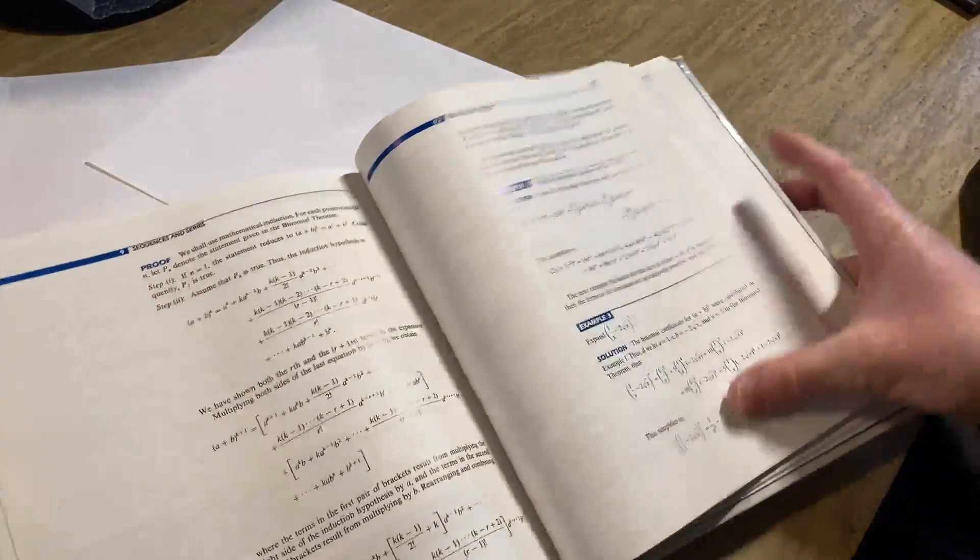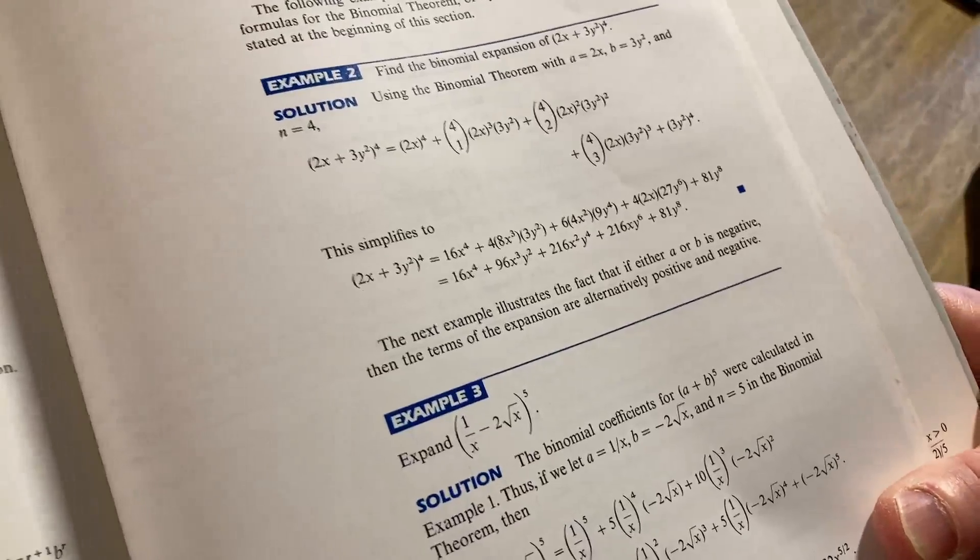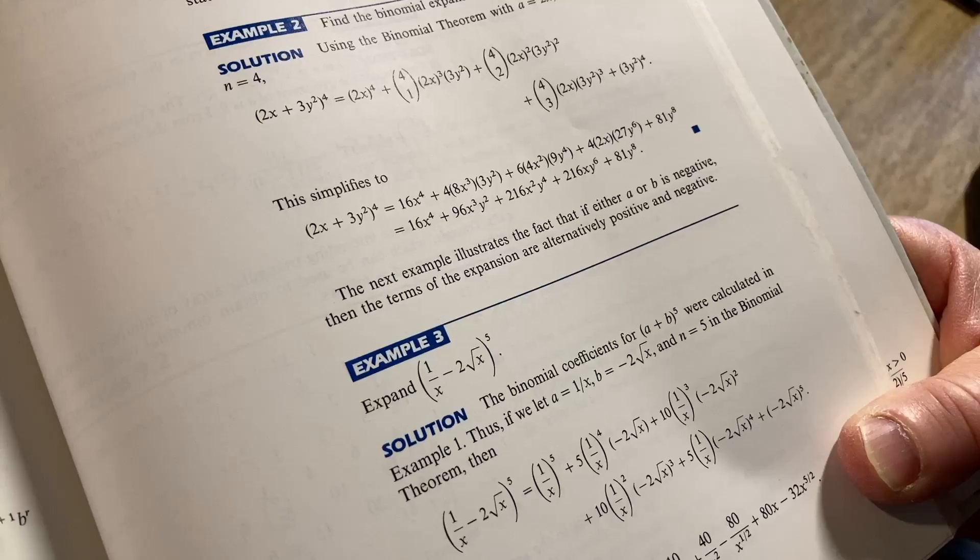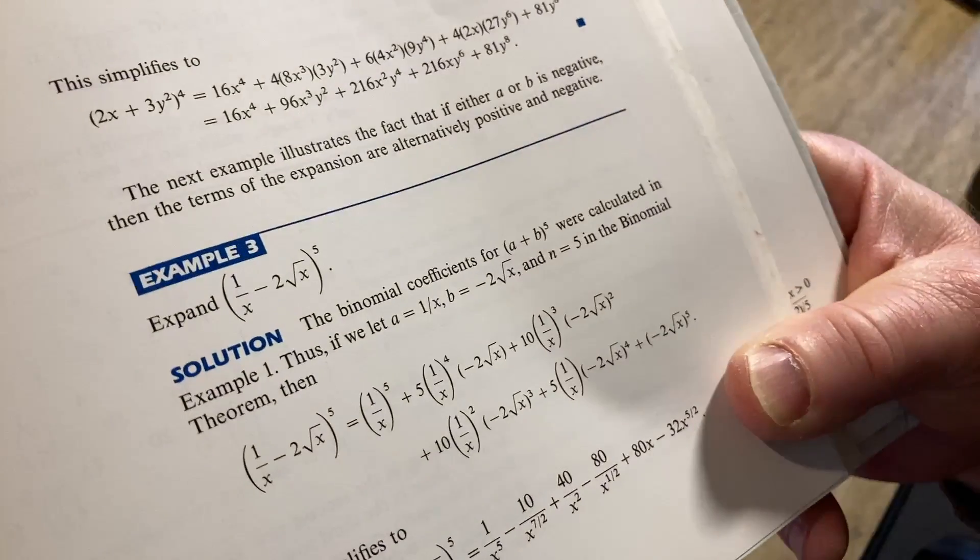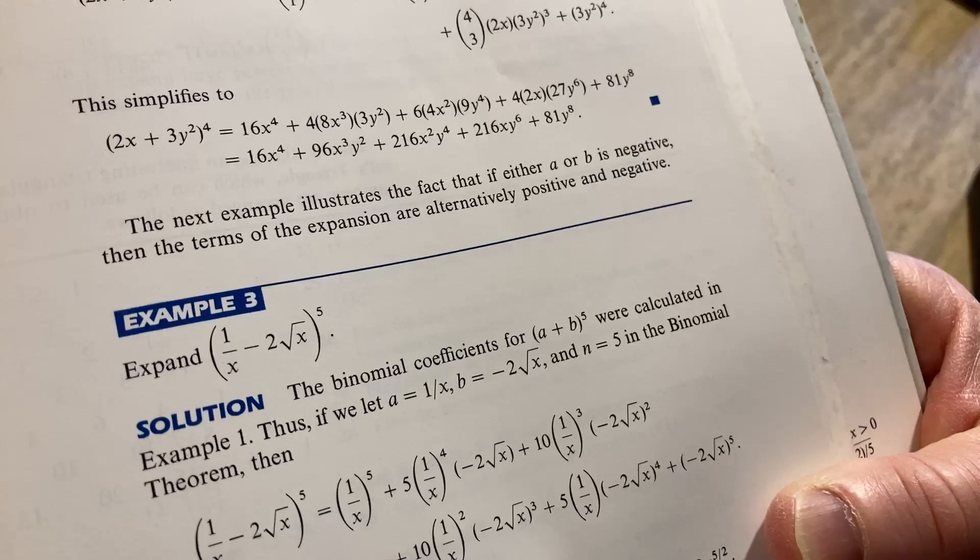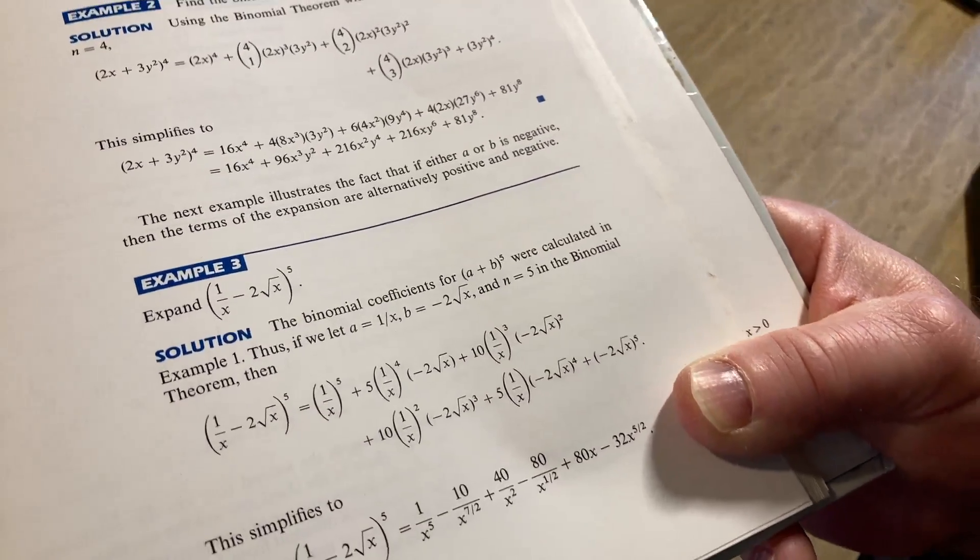This is cool. This is expanding. So here we're expanding using, well, I guess the binomial theorem, but you can use Pascal's triangle. That's how I do it, which the coefficients in the triangle are called the binomial coefficients. So here it says, the binomial coefficients for (a plus b) to the five were calculated in example one. And they give you a and b, and n equals five in the theorem, and you get this expansion.